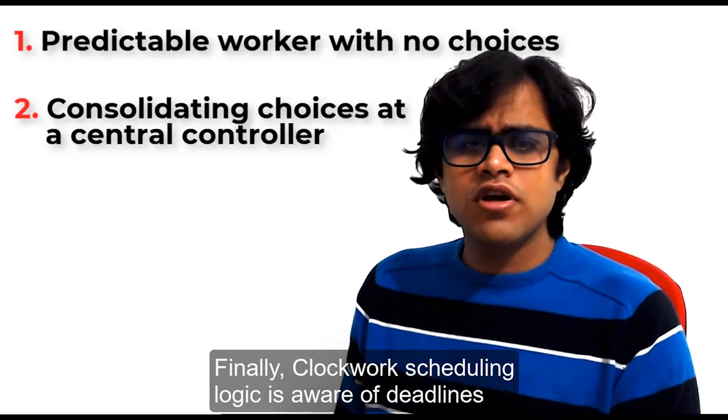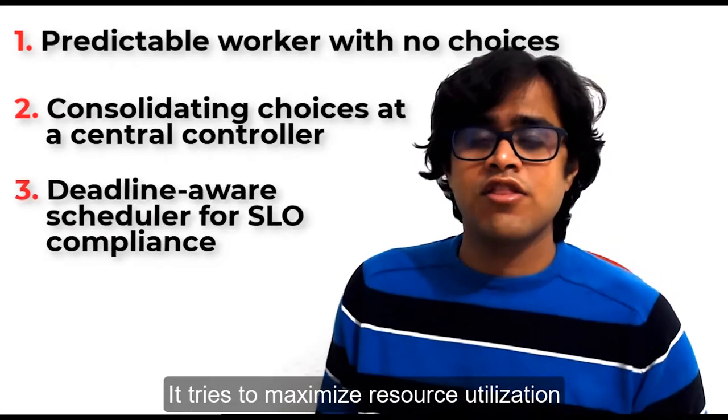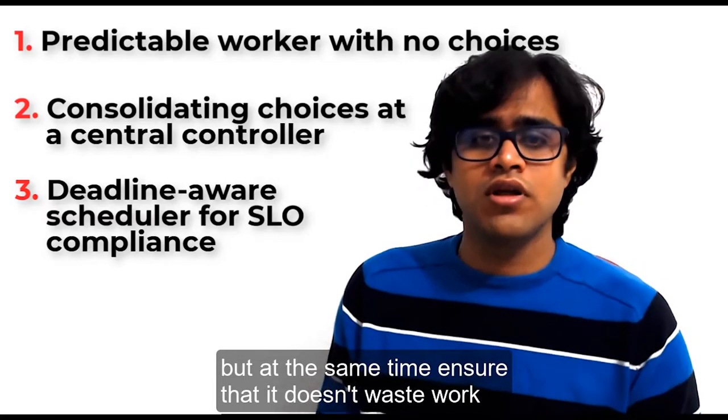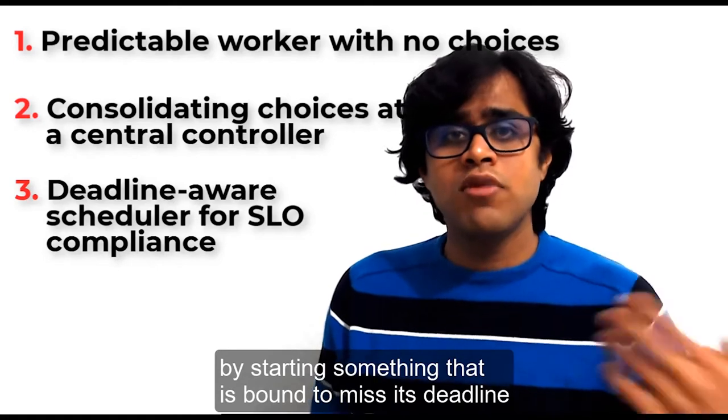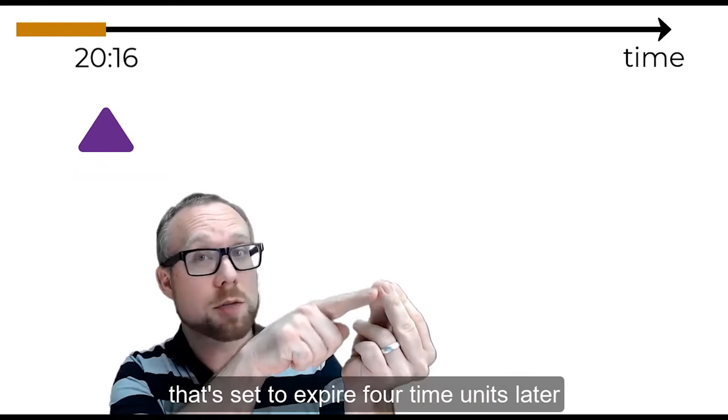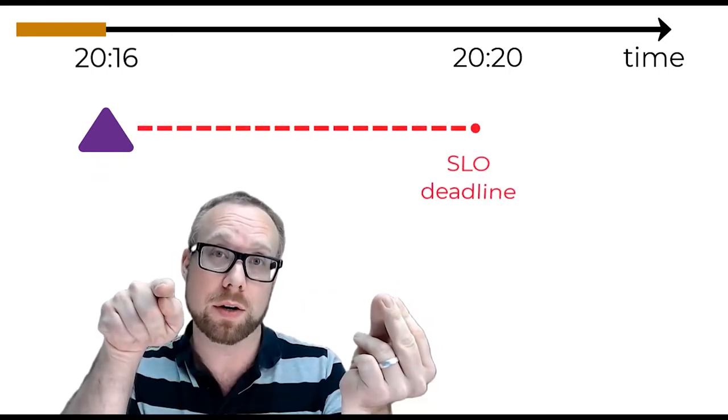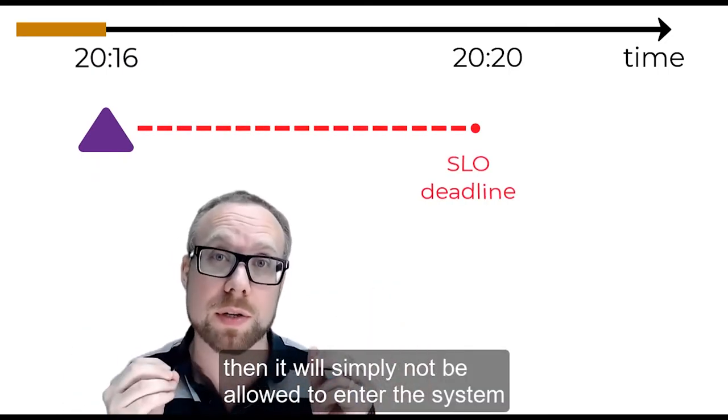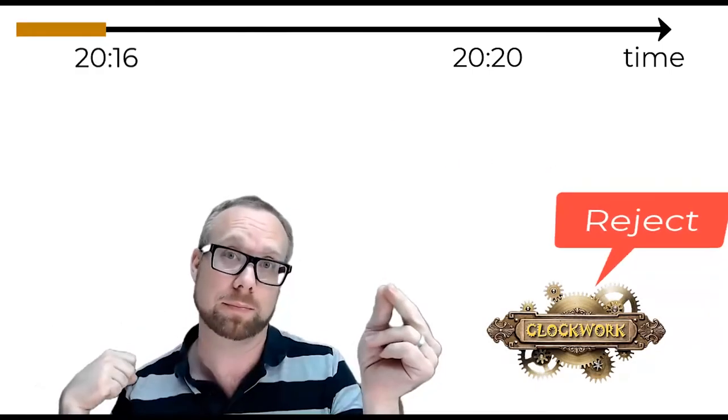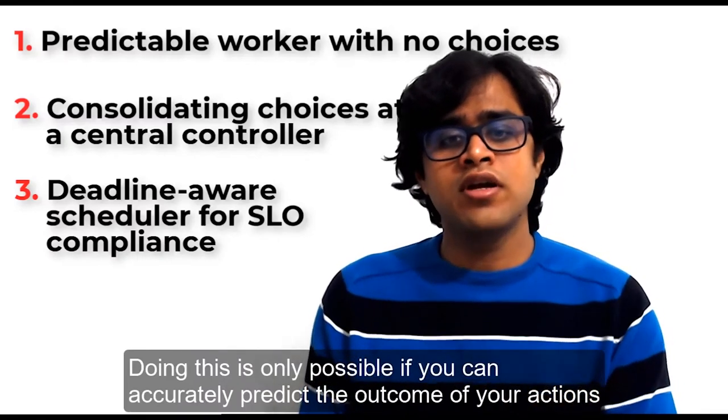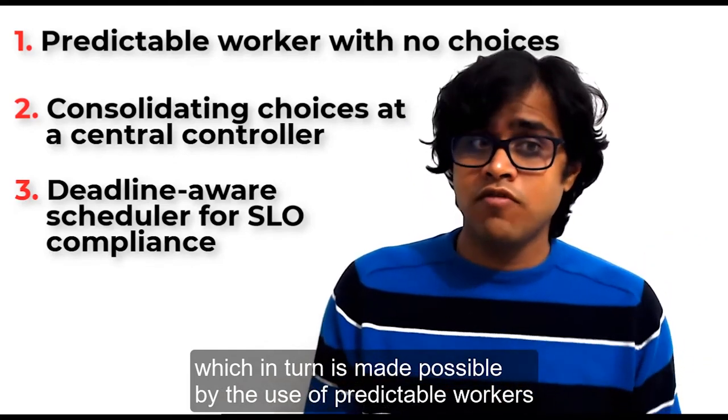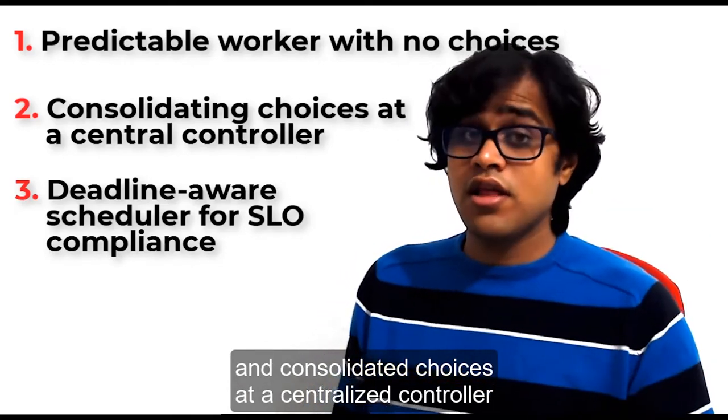Finally, Clockwork's scheduling logic is aware of deadlines. It tries to maximize resource utilization but at the same time ensures that it doesn't waste work by starting something that is bound to miss its deadline. For example, if a request arrives at 2016 that's set to expire 4 time units later, then it will simply not be allowed to enter the system unless we can guarantee it will be out of the system by 2020. Doing this is only possible if you can accurately predict the outcome of your actions, which in turn is made possible by the use of predictable workers and consolidated choices at a centralized controller.